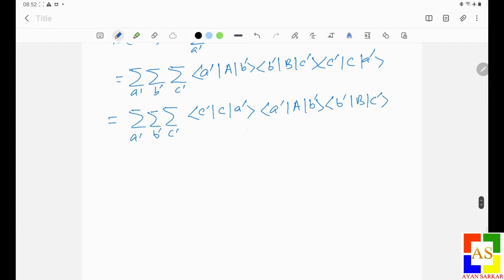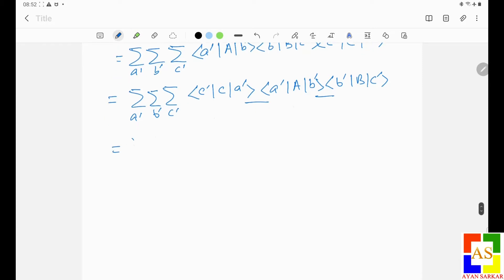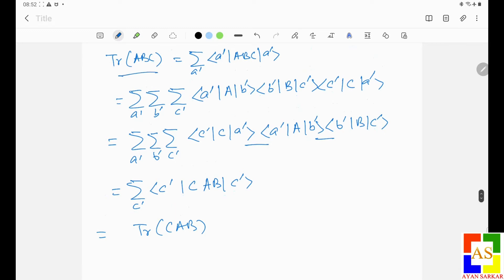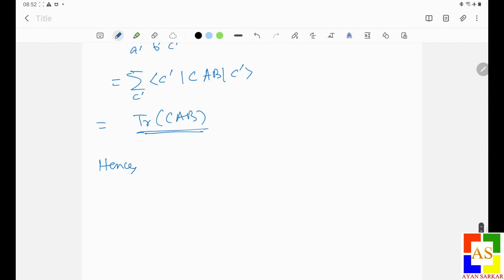Just rearrangement. Again you see that this term and this term will be one, so finally I can write from here with some step jumps, which is nothing but trace of CAB. Hence you see that trace of ABC is also equal to trace of CAB.